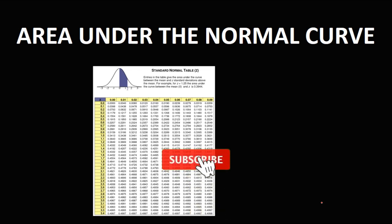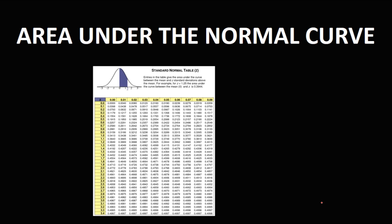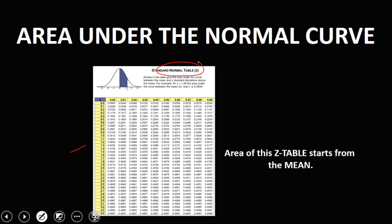So let's have this topic: solving for the area under the normal curve. Using this table, the Z table, to solve for the area of the normal curve. Take note that the area of this table starts from the mean.